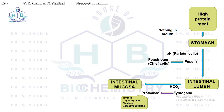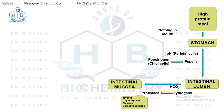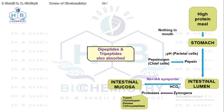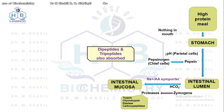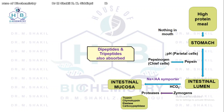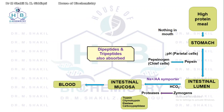A key difference between the sodium amino acid symporter and the sodium glucose symporter is that the sodium amino acid symporter can transport dipeptides and tripeptides, which can be absorbed into the mucosal cells. By contrast, the sodium glucose transporter can only transport monosaccharides like glucose; disaccharides and trisaccharides are not absorbed by it. Once these amino acids are absorbed into the mucosal cells, they are transported into the bloodstream and distributed all over the body.